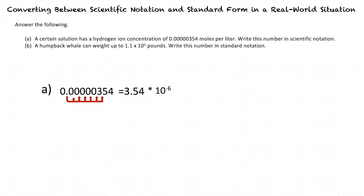The exponent is negative because 0.0000354 is less than 3.54. So the number 3.54 times 10 to the negative 6 is written in scientific notation. So our final answer would be 3.54 times 10 to the negative 6 moles per liter.